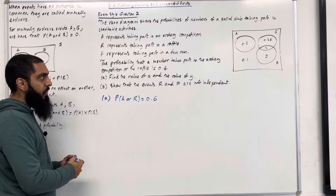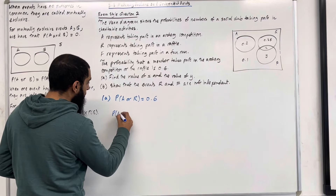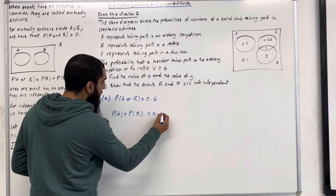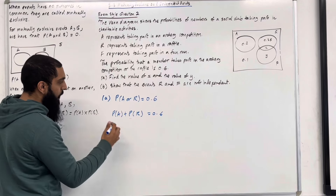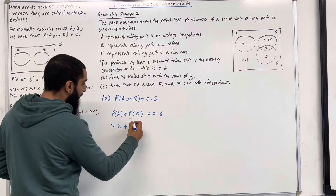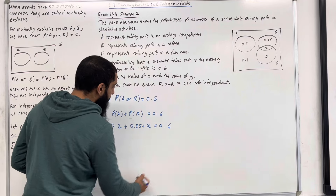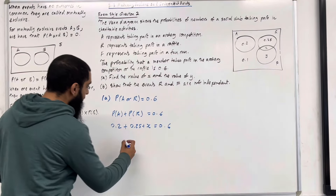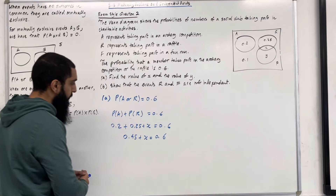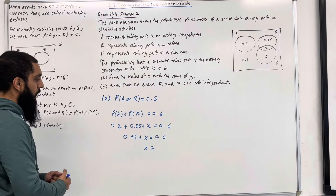Since A and R are mutually exclusive events, they do not have an overlap. This probability is given by probability of A plus probability of R, and that has to equal 0.6. Probability of A from the Venn diagram is 0.2, plus probability of R, which is 0.25 plus X. So this equals 0.6. Simplifying the equation, I get 0.45 plus X is equal to 0.6. Hence X is equal to 0.6 minus 0.45, which is 0.15.